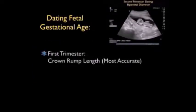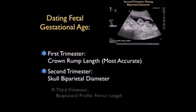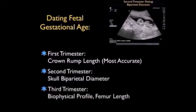The first concept we'll focus on is dating fetal gestational age. In the first trimester, we're going to use an assessment of the crown rump length. Interestingly, dating in the first trimester is actually probably the most accurate during all phases of pregnancy, as there's a difference in the growth curve as the fetus develops.